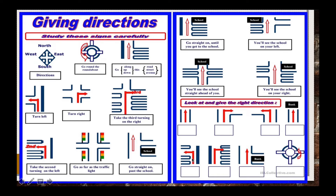Ini ada belokan satu, dua, ketiga — jadi kalian harus belok ketiga ke sebelah kiri. Jawabannya apa? Dan selanjutnya ada belokan ke berapa ini? Satu, dua, tiga, empat — belokan ke empat, dan kamu harus belok kanan.